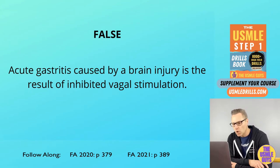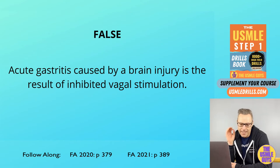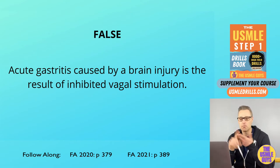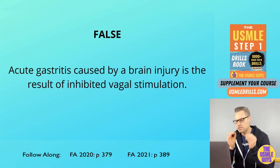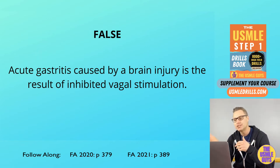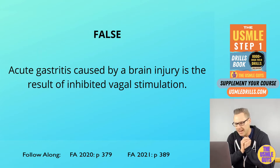This is false. The erosions associated with acute gastritis are going to be caused by one of three things: NSAID use, burns, or brain injuries. The brain injury, also known as the Cushing ulcer, results in an increase in vagal stimulation that increases ACh, which increases hydrogen ion production. Burns, on the other hand, are known as Curling ulcers, and these are the result of hypovolemia-induced mucosal ischemia.